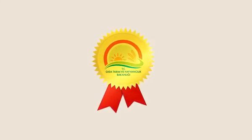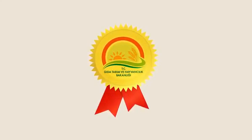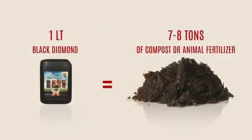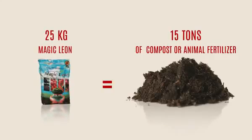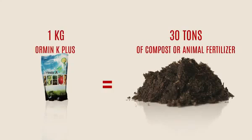In terms of humic fulvic acids content and bioactivity: 1 litre of Black Diamond humic acid is equal to 7–8 tonnes of compost or animal fertiliser; 25 kg Magic Leon equals 15 tonnes of compost or animal fertiliser; and 1 kg of 70% concentrated Ormin K Plus humate is equal to 30 tonnes of compost or animal fertiliser.